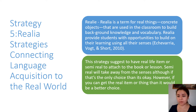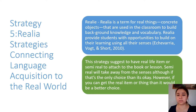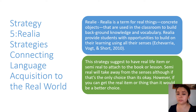If you don't have a banana, you can have fake food, and that would be semi-realia. But if you do have a banana, the best option is a real concrete object. This strategy suggests having a real-life item to include with the book or the lesson, and there are other ways you can use this.